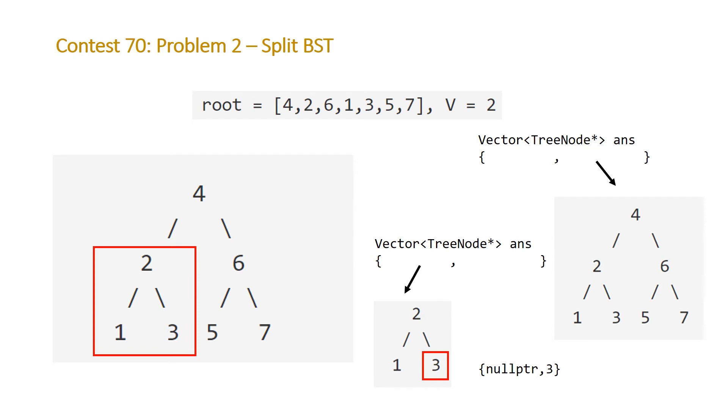Ultimately that function will return a vector that has a null pointer for its first element because it doesn't have any children so nothing will get stored in the first element and it will just have the node containing the value three in the second element. When this gets returned we'll do two assignments. We'll put the three in the second element and we'll put the null pointer to overwrite the right child node that we originally did our recursive function call on.